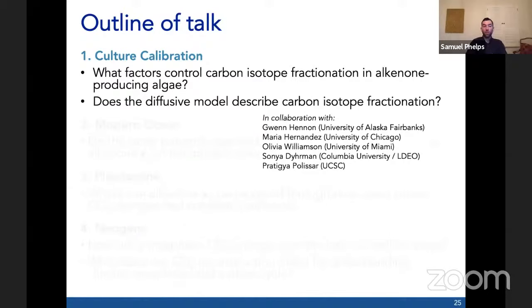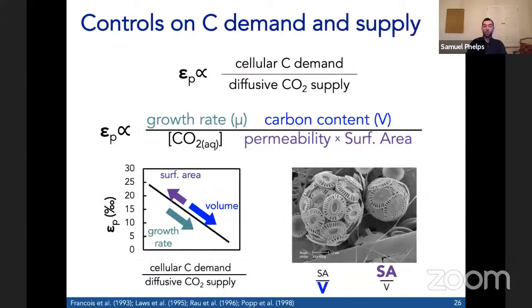First, let's look at the calibration. The driving questions here are: what factors control carbon isotope fractionation in alkenone producing algae, and does the traditional diffusive model describe carbon isotope fractionation? Let's think about what can modify the expression of fractionation by rubisco and CO2 signal in algal carbon isotope ratios. Decades of work have shown that it's not just the CO2 supply that affects EP, but the carbon demand of the cell relative to the CO2 supply. It's really the balance of these two processes that affects the CO2 concentration inside the cell, how much is consumed and converted to organic matter, and how strongly the fractionation by rubisco is expressed.